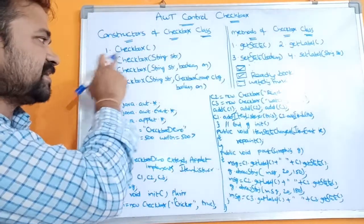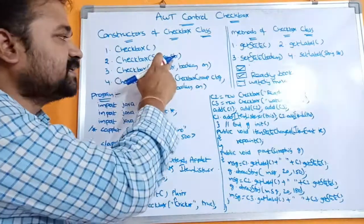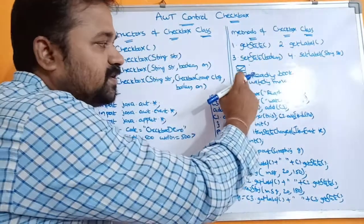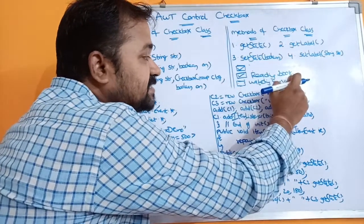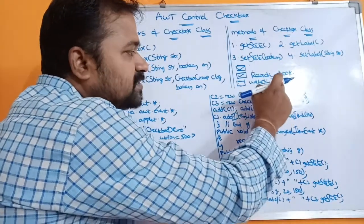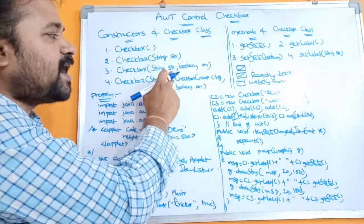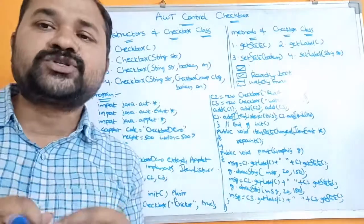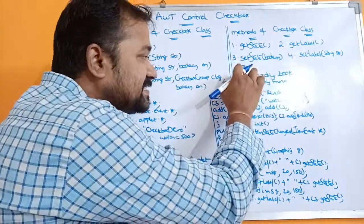The second constructor is Checkbox(String str). Here we have a checkbox with a label such as 'reading books' or 'watching movies' — this label is the string passed in. The third constructor is Checkbox(String, boolean). The boolean value may be either true or false. True means by default we will get a tick mark, whereas false means we won't get any tick mark.